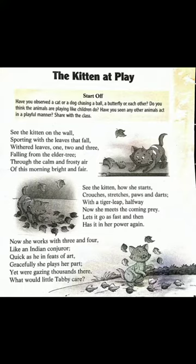This poem is about Tabby — Tabby is the name of a little kitten. The young one of a cat is called a kitten. In this poem, the poet says that the kitten is playing on the wall with the leaves. The leaves were falling from the elder tree — elder is the name of a type of tree. It was winter season, that's why the air was calm and frosty, and the morning was bright and fair.